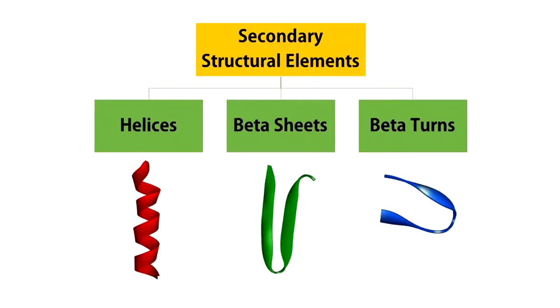Three general types of secondary structure elements have been identified: helices, beta sheets, and beta turns.